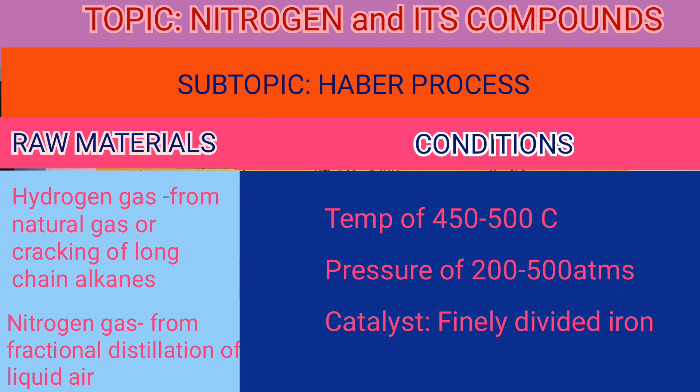The conditions required for this process are a temperature of 450 to 500°C — the optimum temperature is 500°C — and a pressure of 200 to 500 atm, with the optimum pressure being 200 atm. The catalyst used is finely divided iron. The reason it is finely divided is to increase the surface area for the reaction.